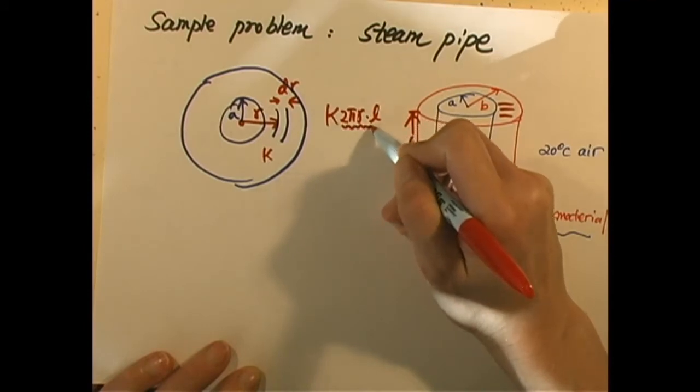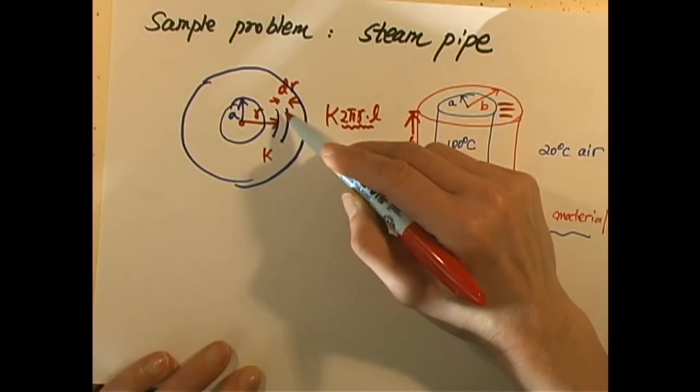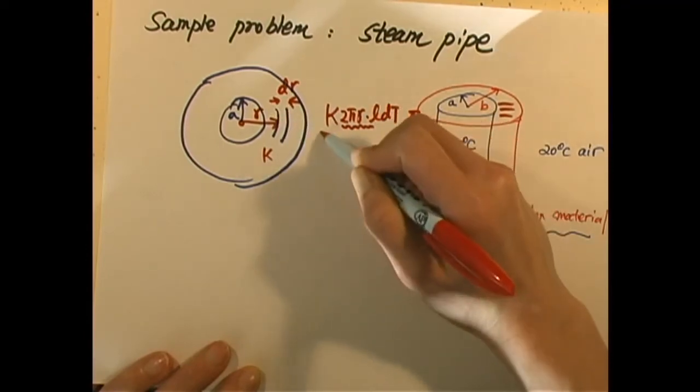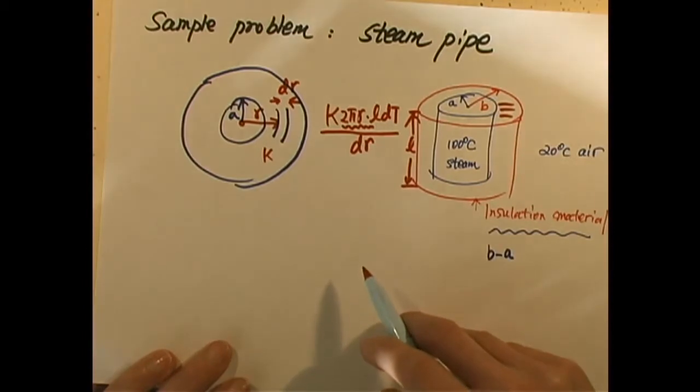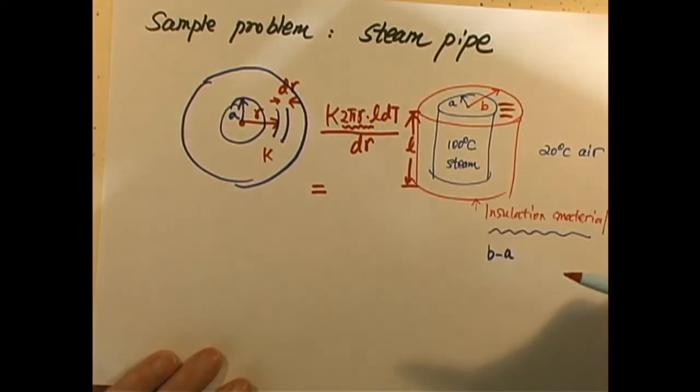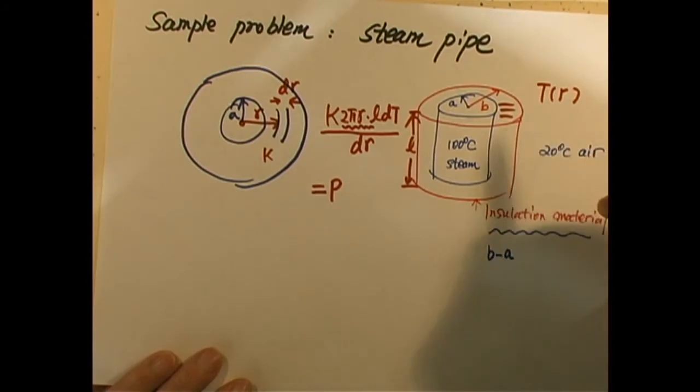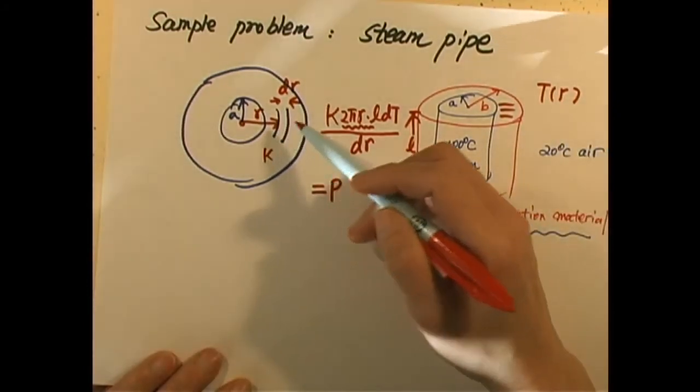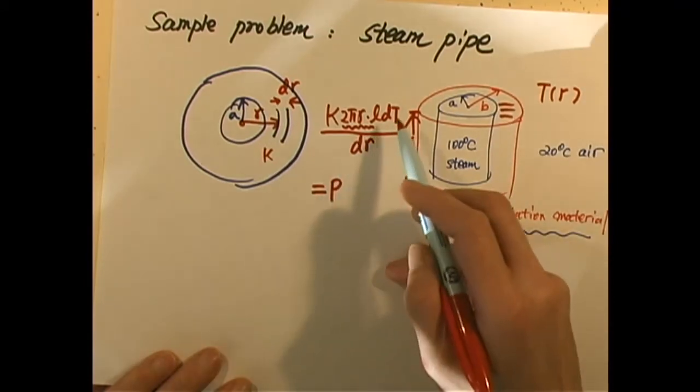So that is the cross-section area. K cross-section area delta T, where delta T is the temperature change across this layer. The thickness is dR, so that is the power transmitted. That equals a constant. Why? Because once the temperature gradient is established, T is a function of R. Every second, the power past each layer must be the same. So it's constant.